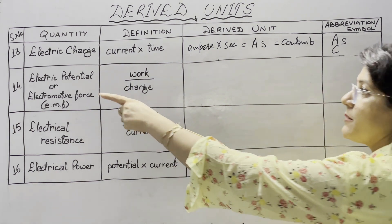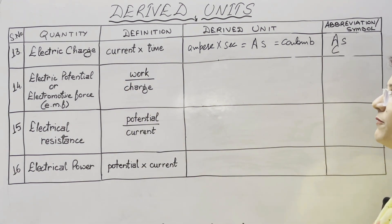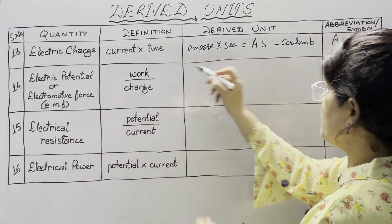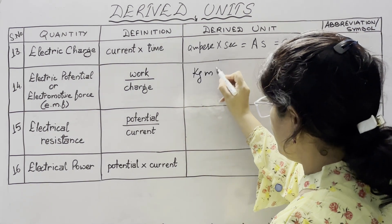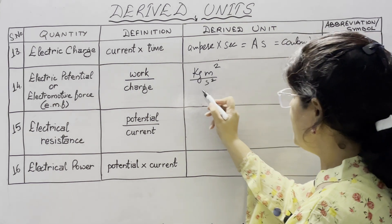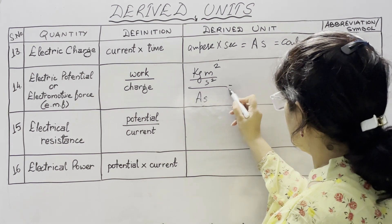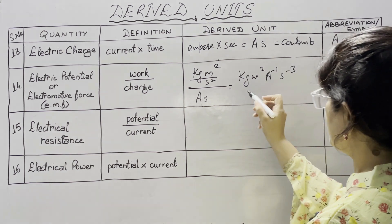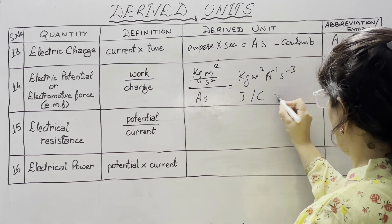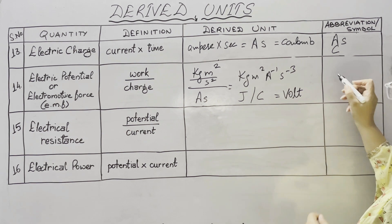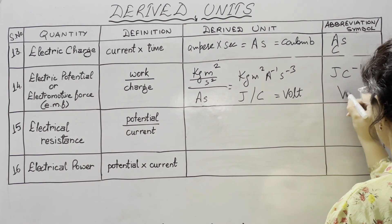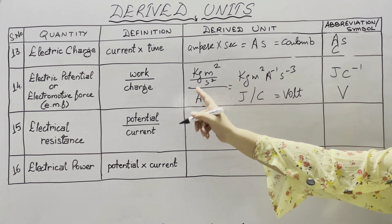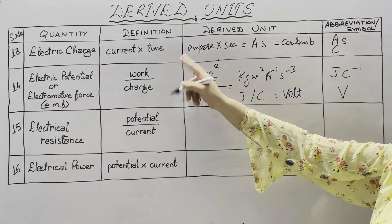Next is electric potential or electromotive force, written as EMF. It is work divided by charge. The SI unit of work is kg m² s⁻² and the SI unit of charge is ampere second, so the overall unit is kg m² per ampere per second cube. We can write it as joule per coulomb, or volt. The potential difference between two points is said to be 1 volt if the work done in transferring one coulomb of charge from one point to another is 1 joule.